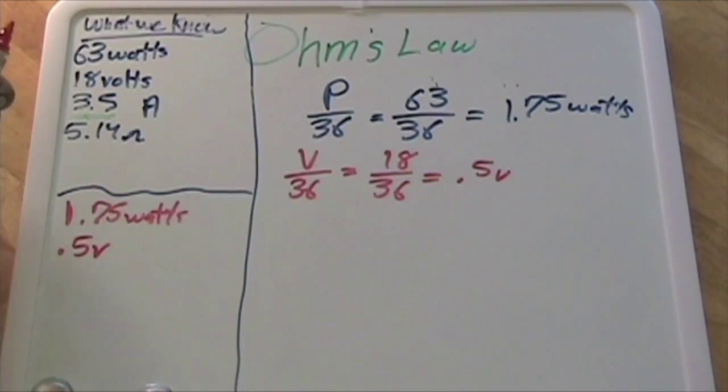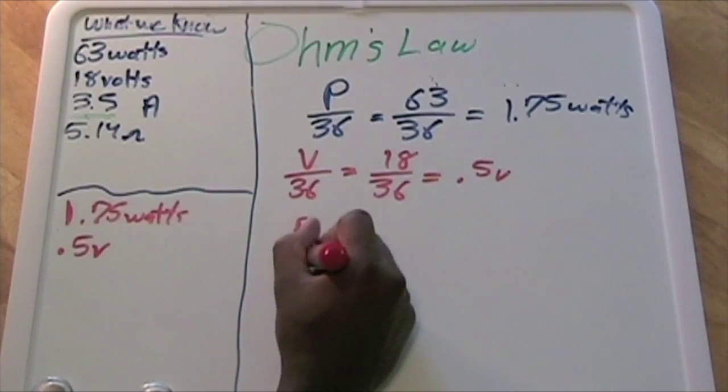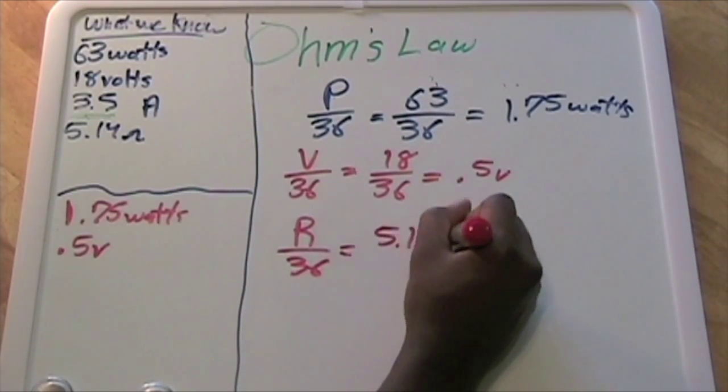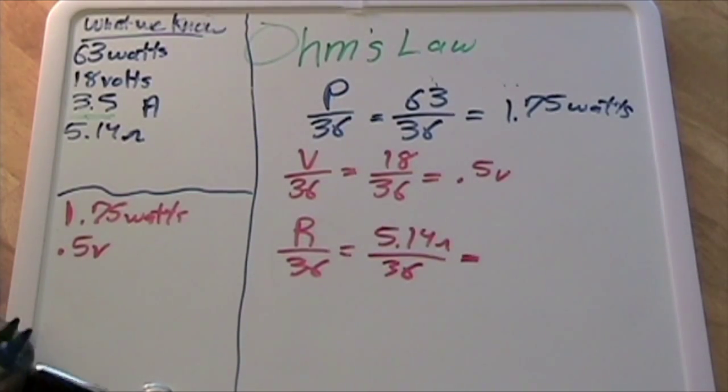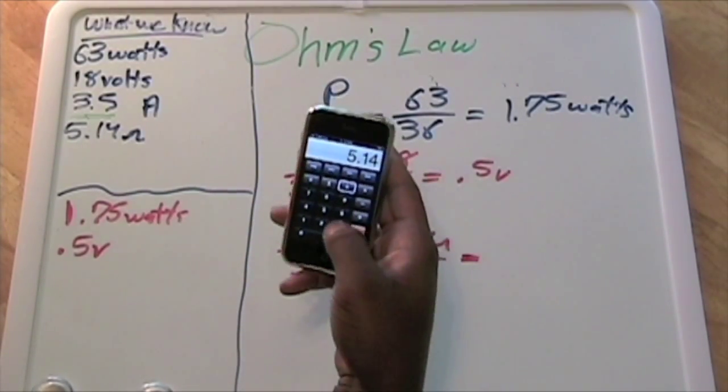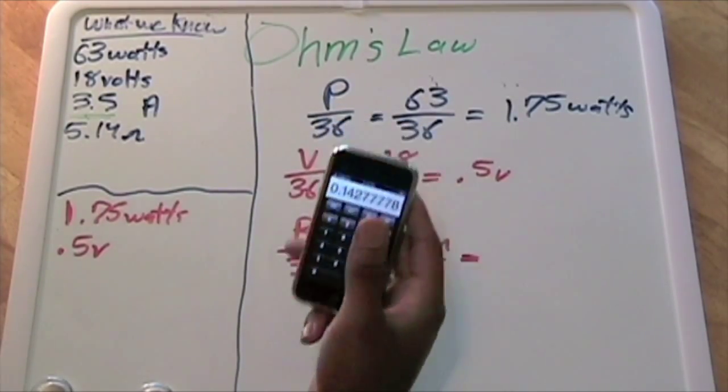Skipping the amps because we can't do that one, but the ohms would be R divided by 36, which equals 5.14 ohms divided by 36. That gives us 0.143 ohms per solar cell.